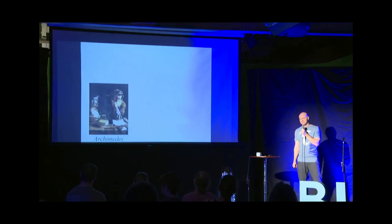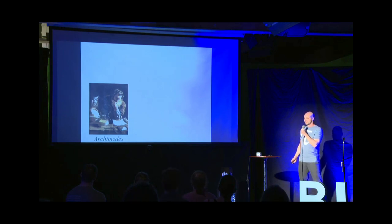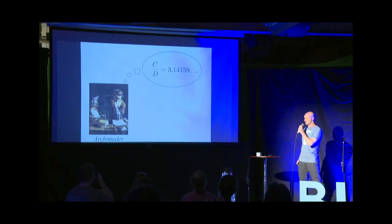Pi was famously approximated by the great Greek mathematician Archimedes of Syracuse. In modern decimal notation, it appears as being a little over 3, c over d is 3.14159, and so on.